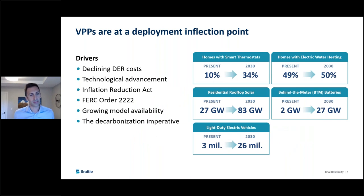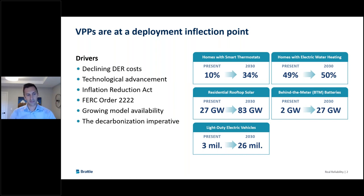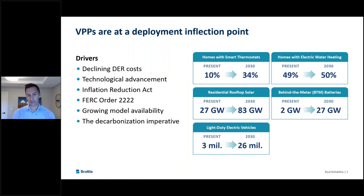We're potentially at an inflection point when it comes to VPP deployment. A number of drivers are pushing us in this direction: the cost of distributed energy resources — solar, battery, and others — is coming down rapidly, with long-run expectations for continued declines. We're seeing a lot of technological advancement, particularly in the software needed to manage DERs in an orchestrated way. The Inflation Reduction Act is reducing the price of these technologies, and FERC Order 2222 is designed to give distributed energy resources an opportunity to participate in wholesale markets on a level playing field.